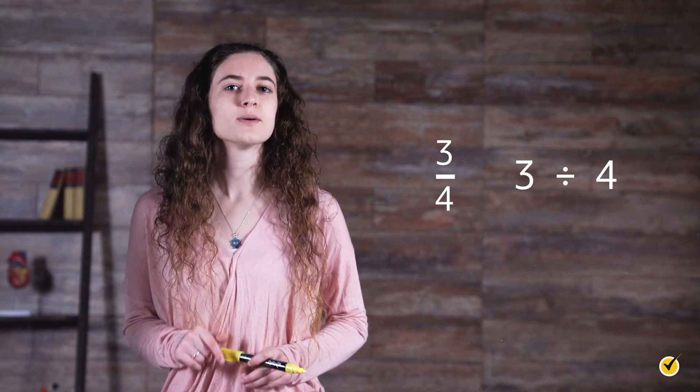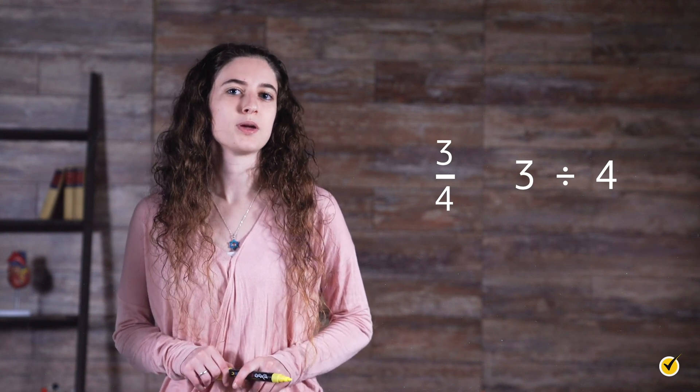Turning fractions into decimals is a little bit more challenging, but still doable. To turn a fraction into a decimal, we first have to remember that the fraction bar means divide. This means that three-fourths is really the same as three divided by four. So if we want to turn three-fourths into a decimal, we simply use long division to divide three by four.